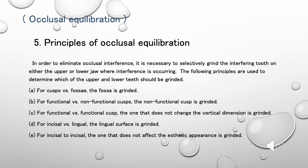Principles of Occlusal Equilibration: In order to eliminate occlusal interference, it is necessary to selectively grind the interfering tooth on either the upper or lower jaw where interference is occurring. The following principles are used to determine which of the upper and lower teeth should be ground. A. For cusps versus fossa, the fossa is ground. B. For functional versus non-functional cusps, the non-functional cusp is ground. C. For functional versus functional cusp, the one that does not change the vertical dimension is ground. D. For incisal versus lingual, the lingual surface is ground.